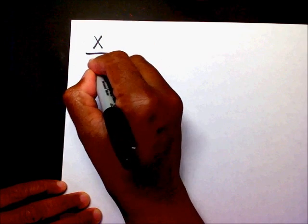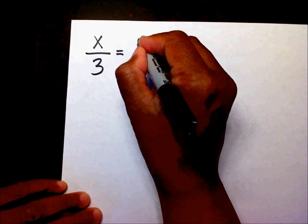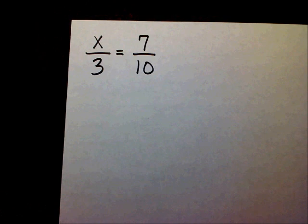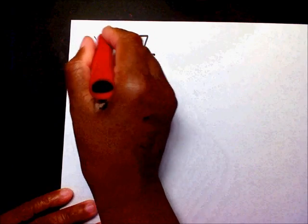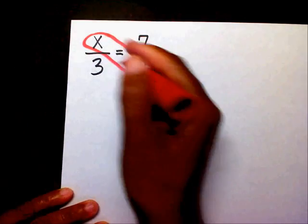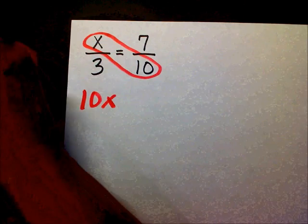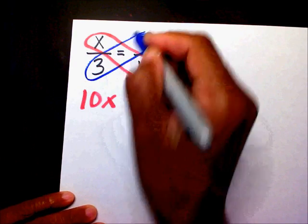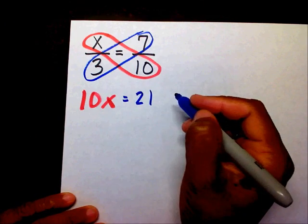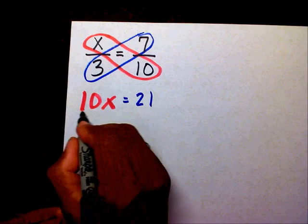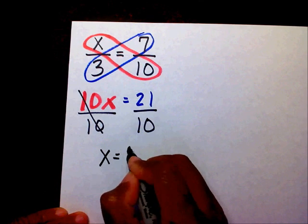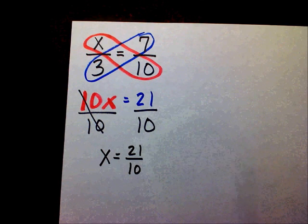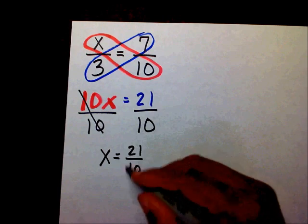Let's try this one: x over 3 equals 7 over 10. You want to go through the same exact method. Multiply x times 10 to get 10x, then multiply 3 times 7 to get 21. Divide both sides by 10 — the tens cancel — so x equals 21 over 10. And if you'd like, you can change that into a mixed number.